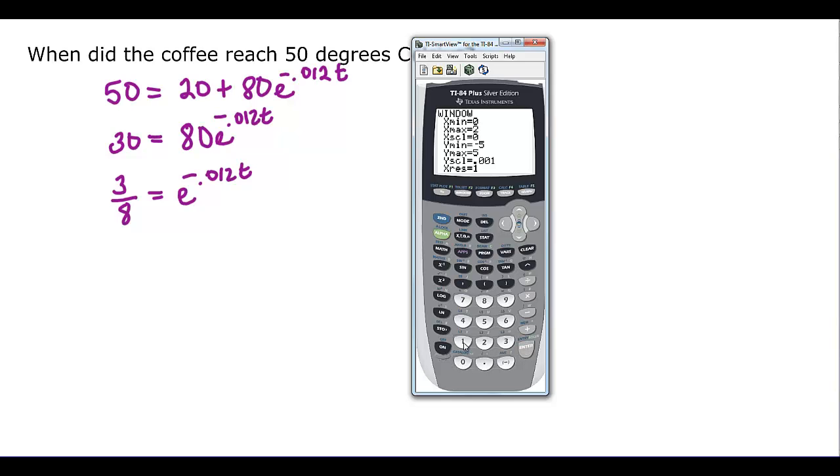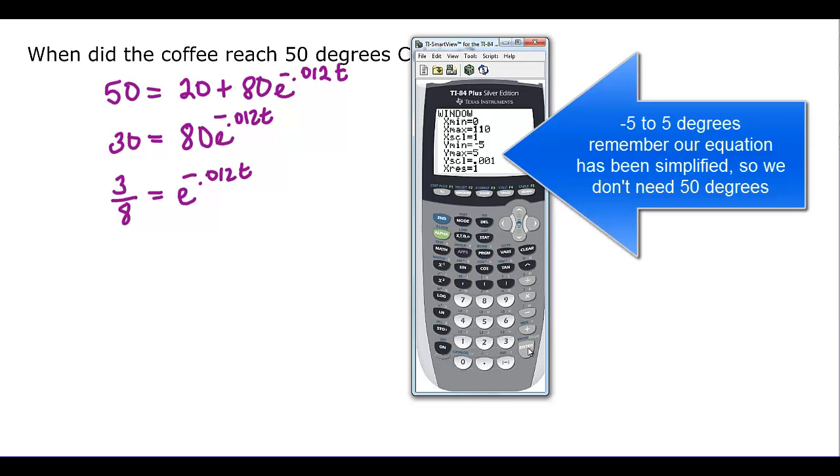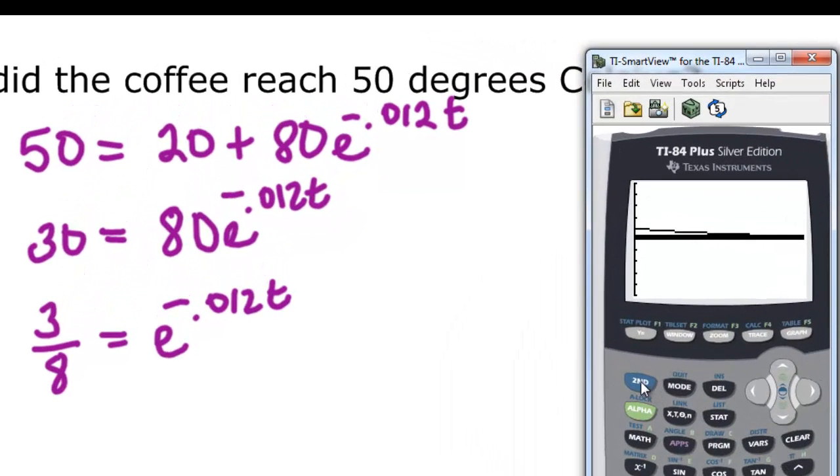We can go from negative 5 to 5, but let's go every 1. And if we look at a graph, there's our 3 eighths, and here comes our exponential. And if we 2nd trace 5, enter, enter, enter, is the intersection. We find out it takes basically 81.7 minutes.